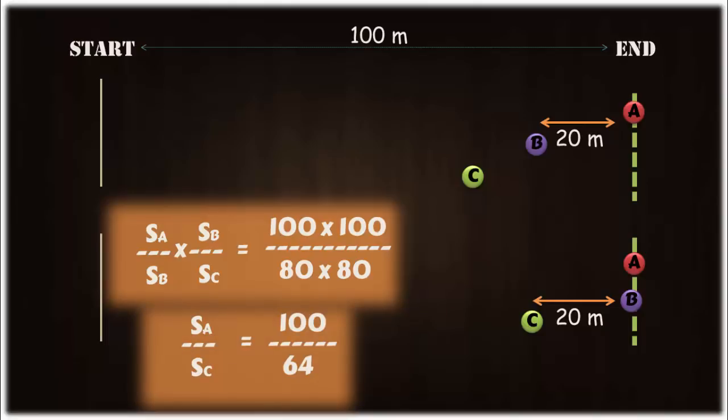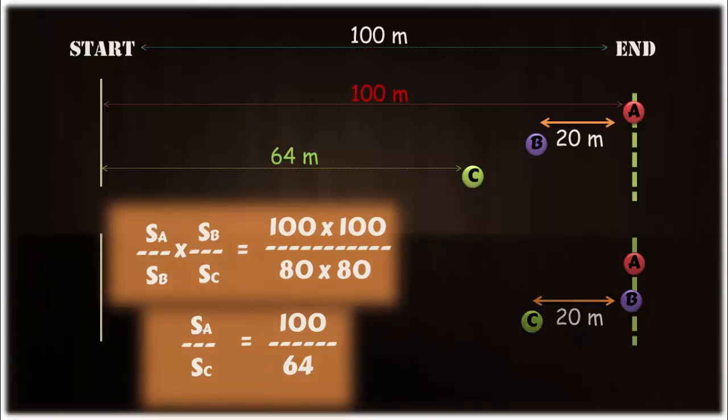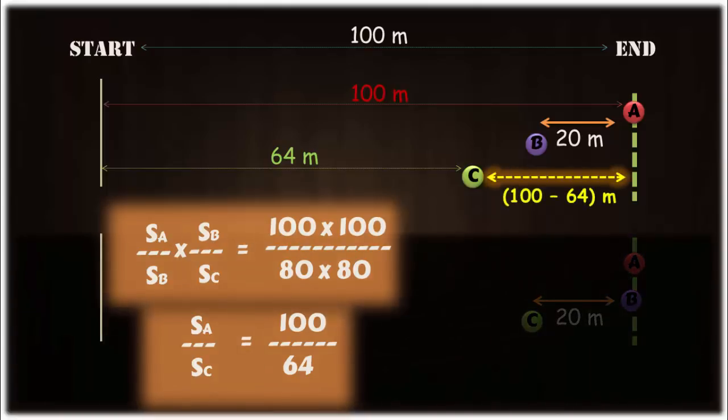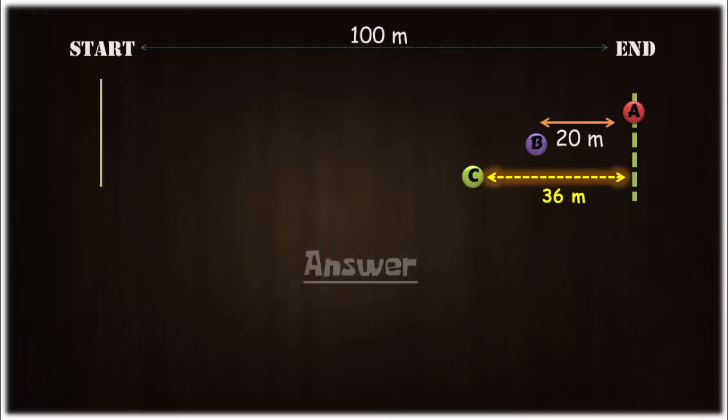That means when A completes 100 meters, C completes 64 meters. So the distance between A and C is 100 meters minus 64 meters, that's equal to 36 meters. So A beats C by 36 meters.